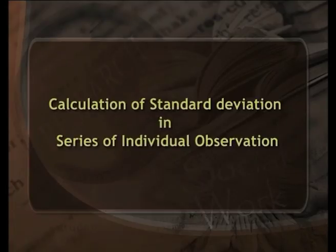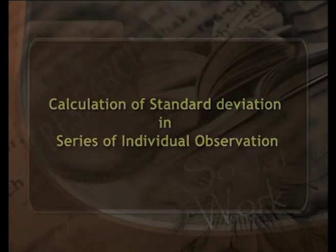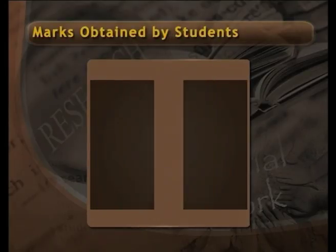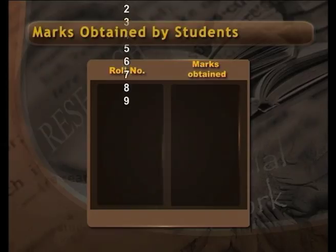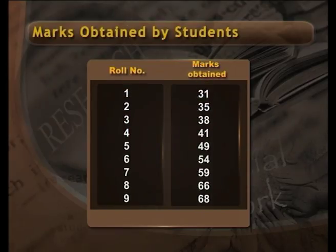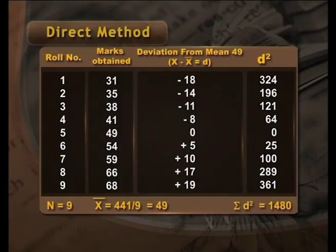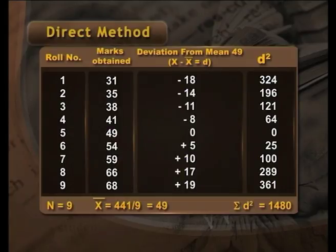Calculation of standard deviation in a series of individual observations. Table 1 shows marks obtained by students — the first column presents roll numbers and the second column presents marks obtained by individual students. Table 2: the first column gives roll number of students, the second column gives marks obtained by each student, the third column gives deviation from mean 49, and the last column is the square of deviation, d².